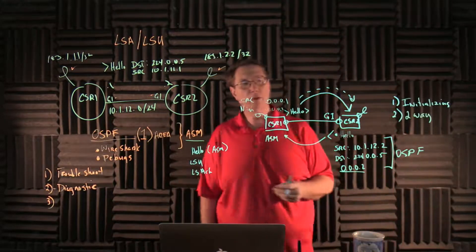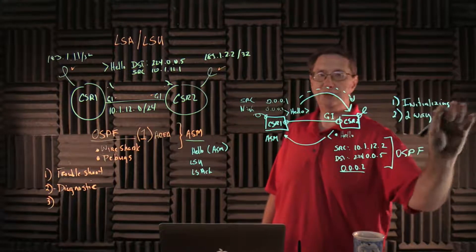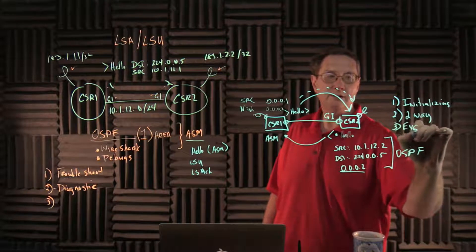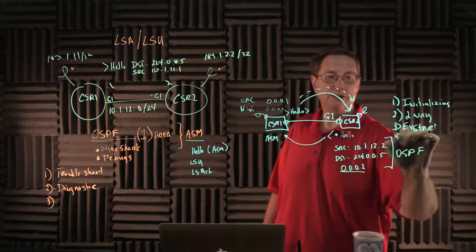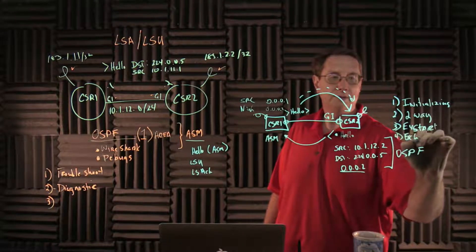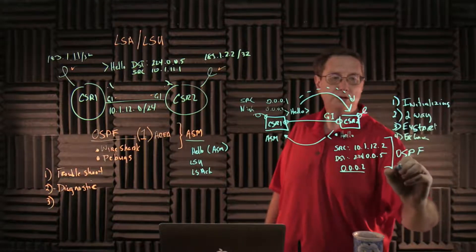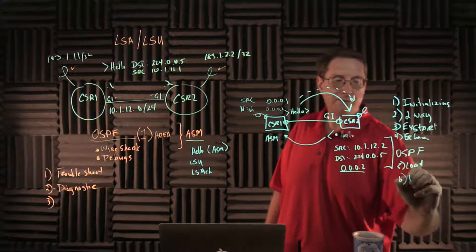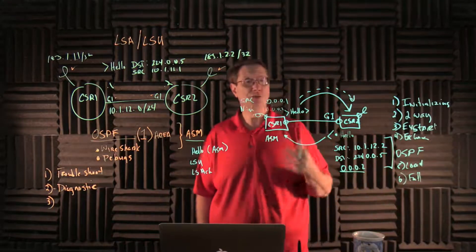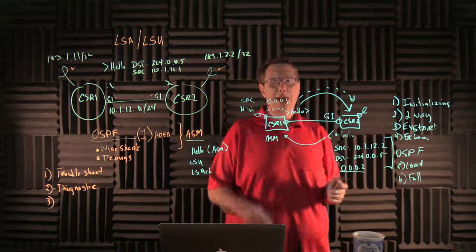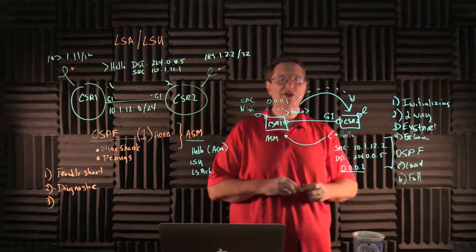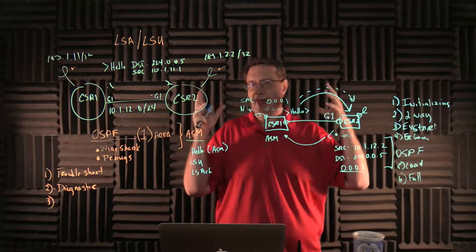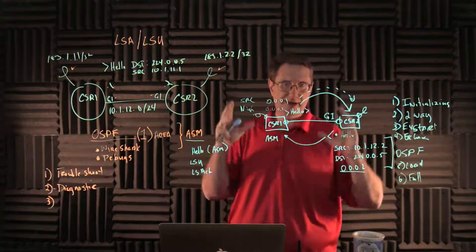When I configure CSR2 to participate in OSPF — placing this interface and the loopback on CSR1 inside OSPF process 1, area 1, and doing the same for CSR2's physical interface and loopback — CSR2 should send its own hello packet sourced from 10.1.12.2 going to destination 224.0.0.5. This constitutes CSR2's hello. Inside that hello packet is a router ID; this device is 0.0.0.1 and CSR2 should be 0.0.0.2.